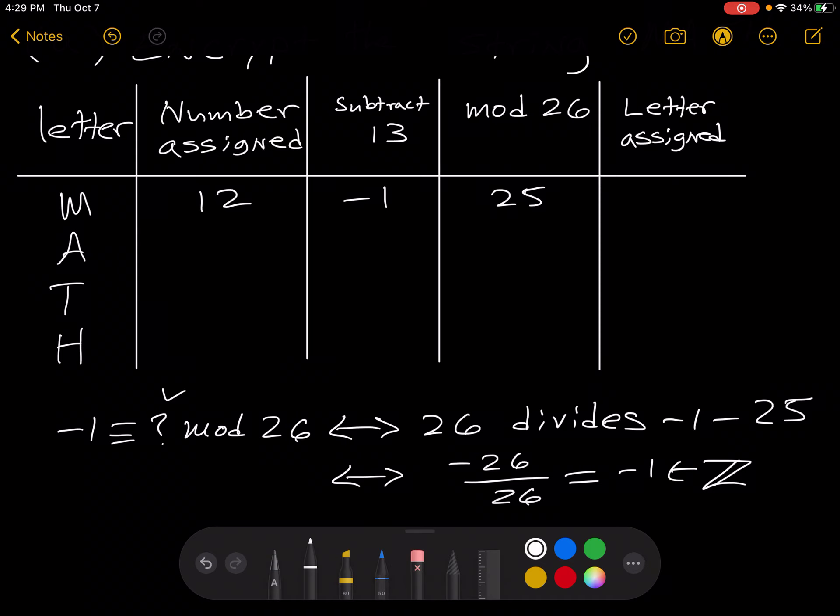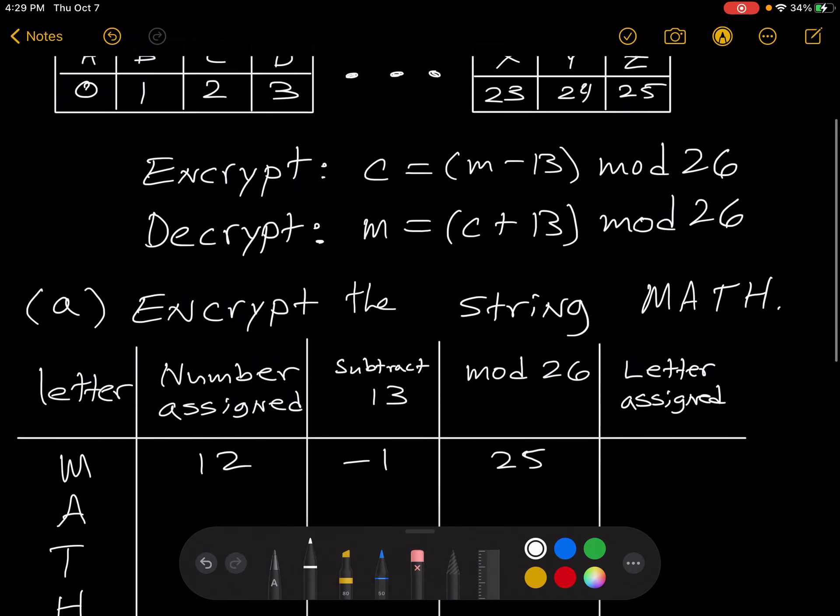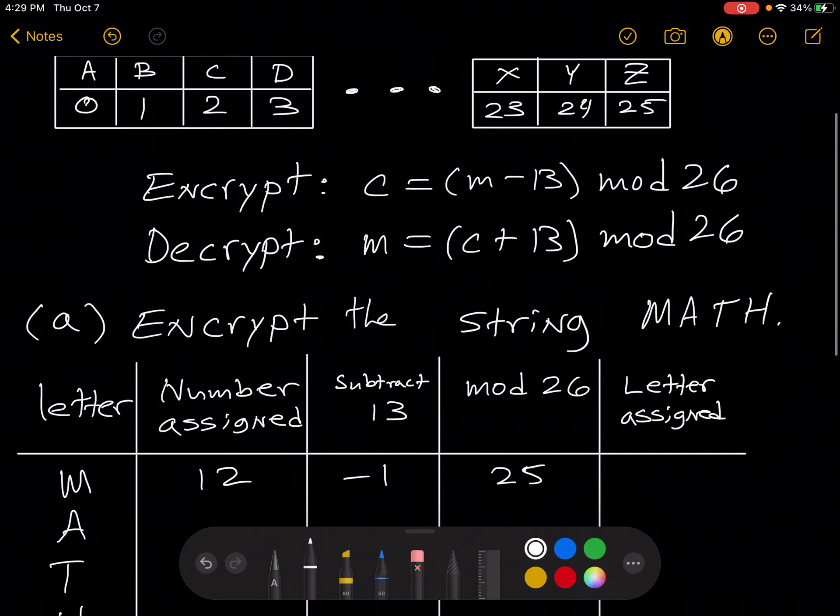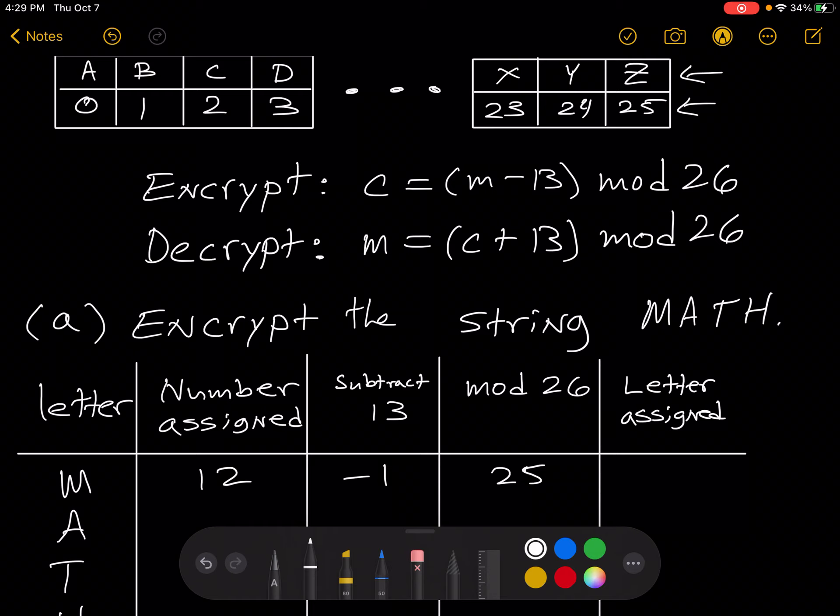Now looking in this table above, we see that Z gives us 25, or that 25 gives us Z. So we have Z here.